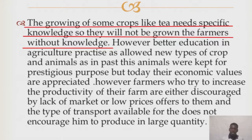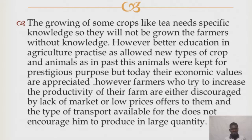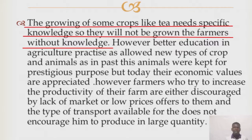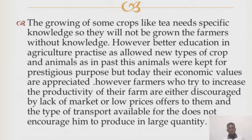Also, the growing of some crops like tea requires special skills and knowledge. Farmers that lack this knowledge will be limited from growing such crops. So in areas where farmers are uneducated or lagging behind skill-wise, tea will never be grown, and this affects the distribution of tea in certain areas.